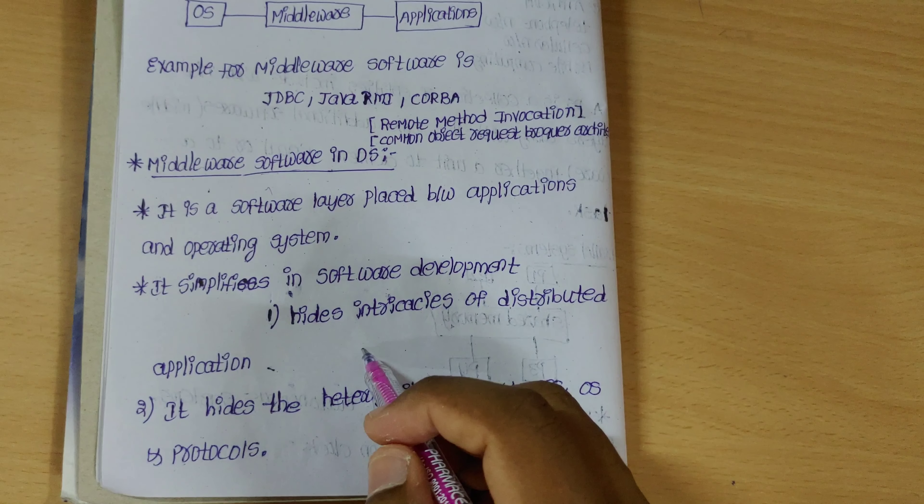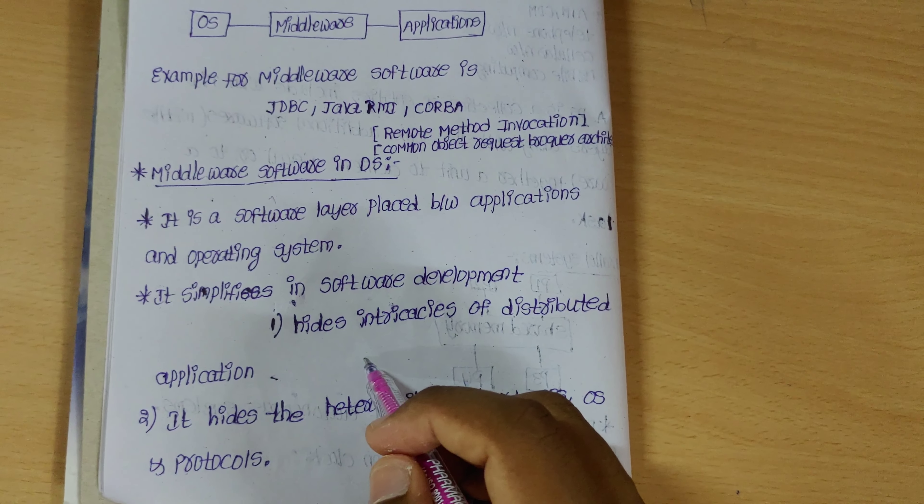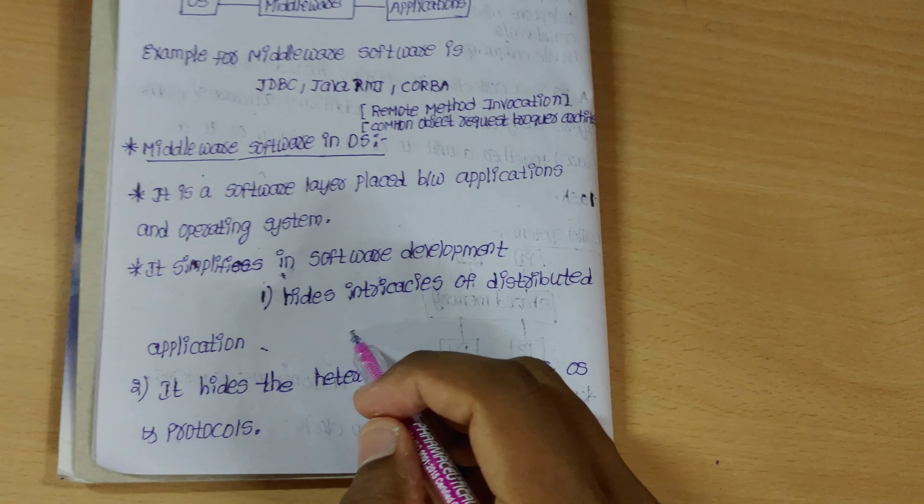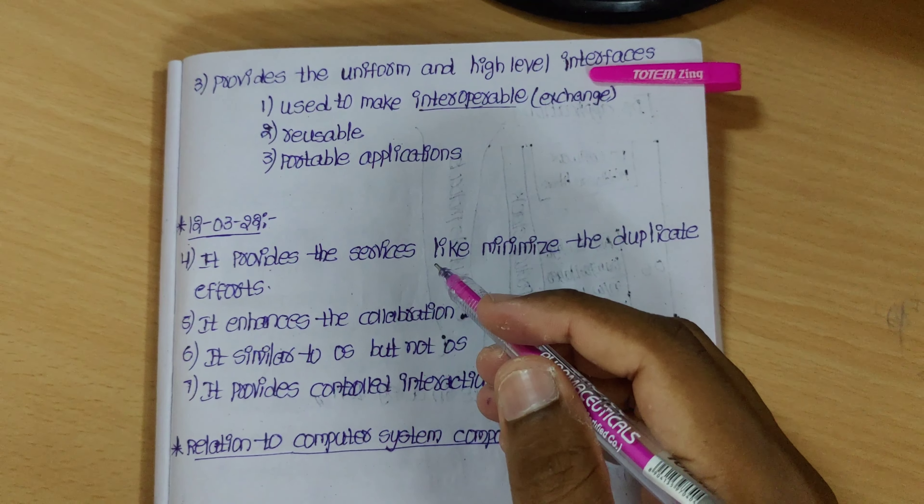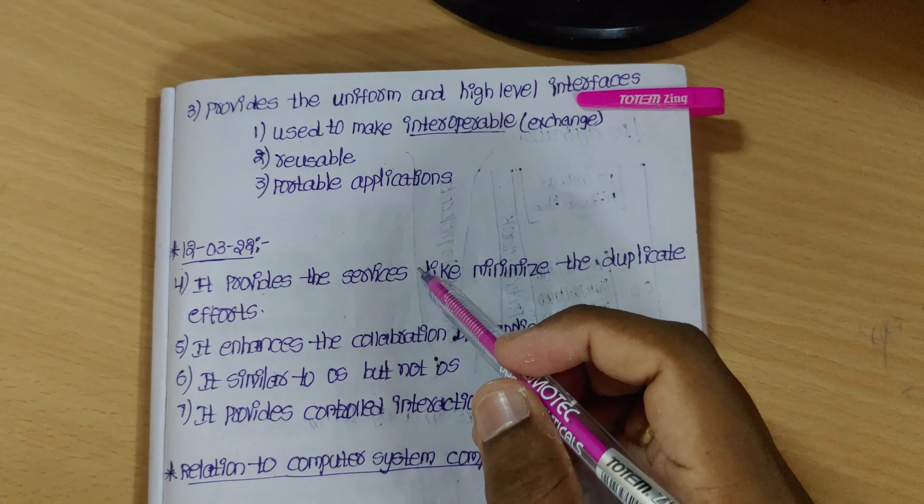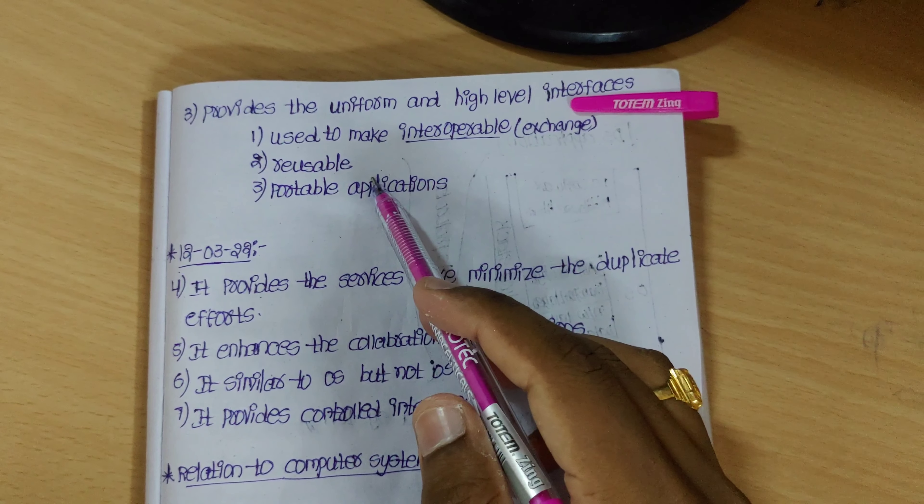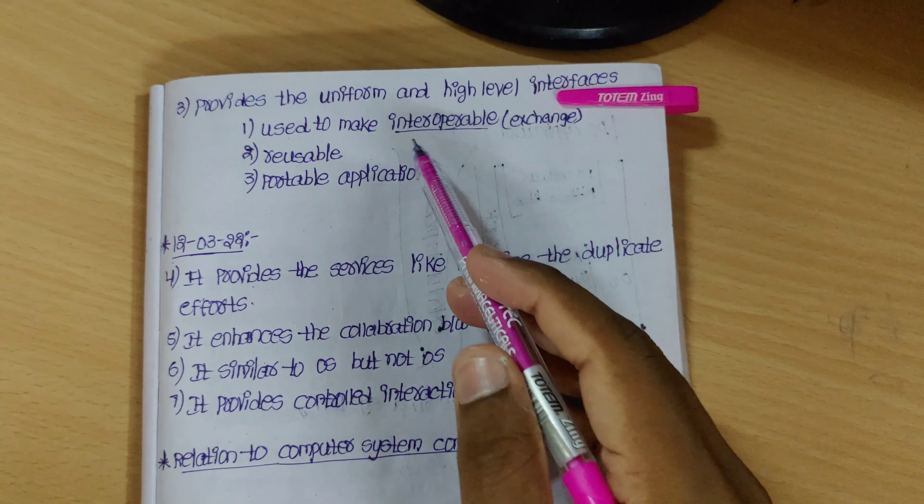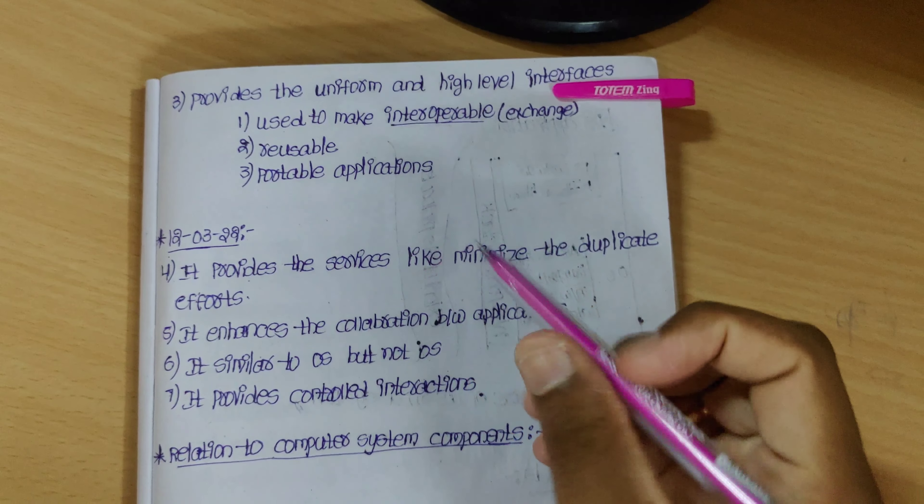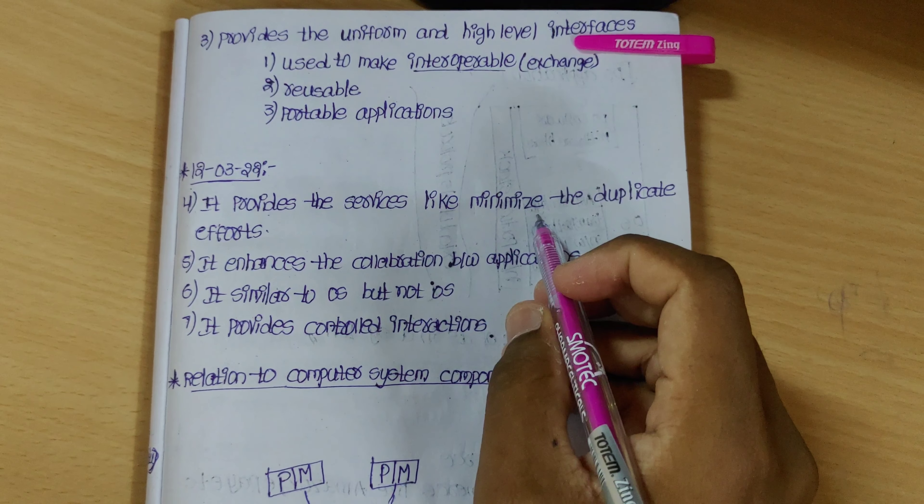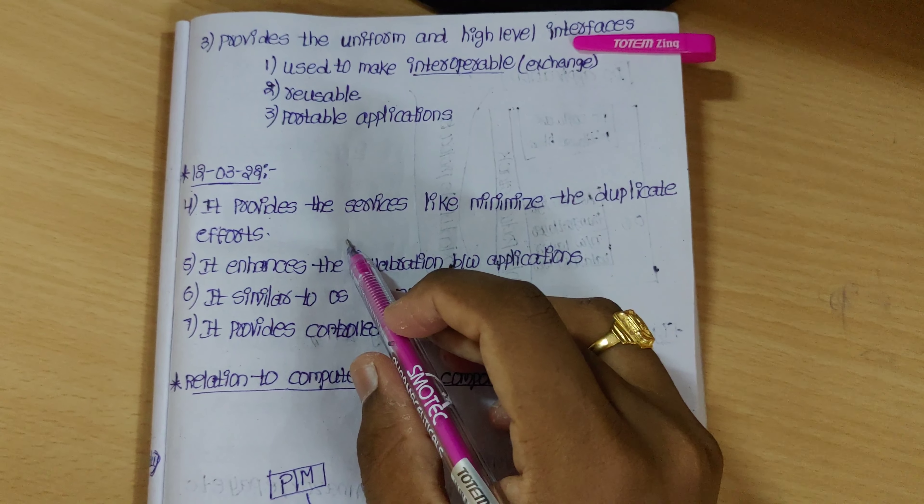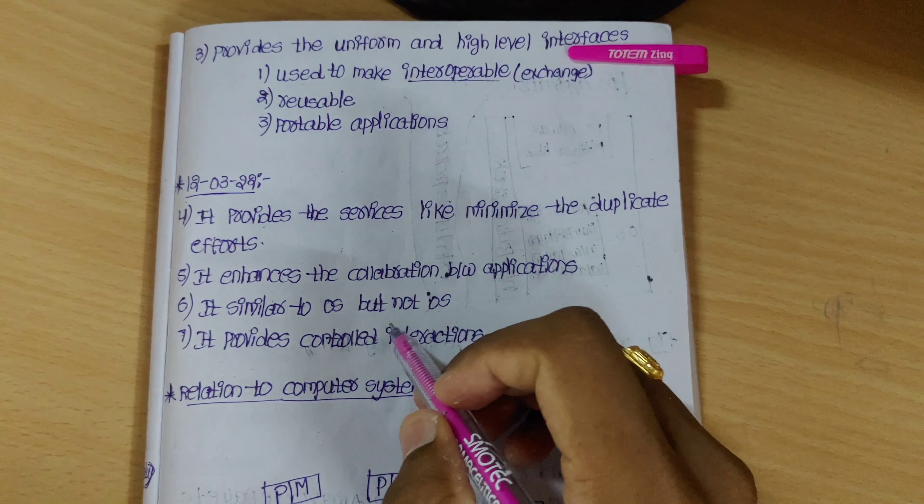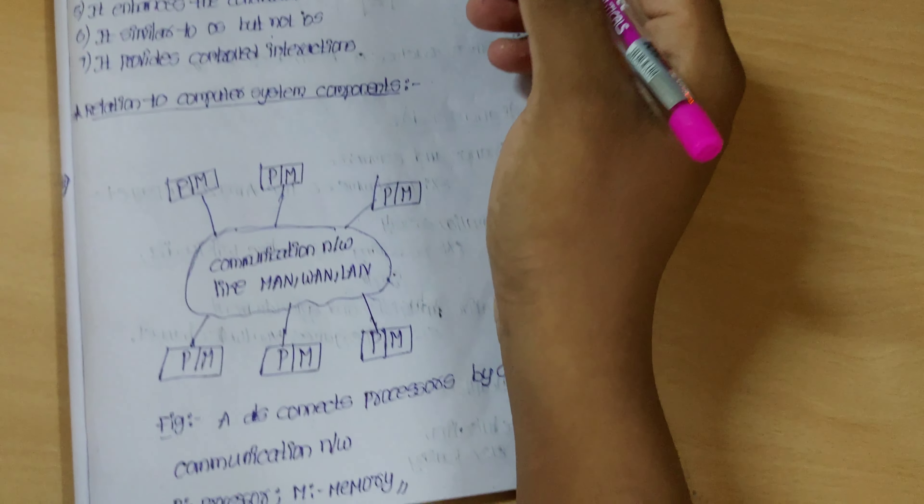It simplifies software development. It hides the intricacies of distributed applications. We will use DS to cover up and get the result of the data. It provides uniform and high-level interfaces. It is used to make it interoperable. We will use the graphics card for the application. It makes the exchange between the application and operating system softwares. We will use the process and tasks to complete it. We will add new features and use portable applications. So if you are not on Windows or Mac, it's portable.